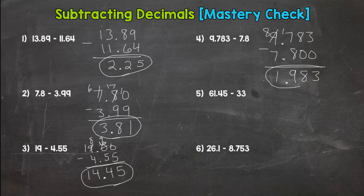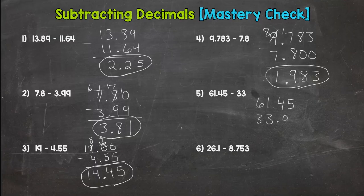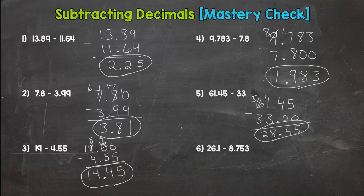And on to number 5 here. Line up our decimals, put placeholder zeros. Need to borrow, get to 11 minus 3, which is 8. 5 minus 3 is 2. So 28.45 hundredths. And then hopefully we finish strong here with number 6.